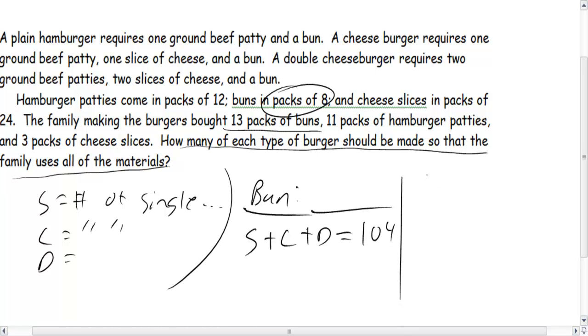Then we need our cheese equation. Now single burgers use no cheese, so zero S's. A cheeseburger uses one slice, and a double burger, if I remember correctly, does use two slices.